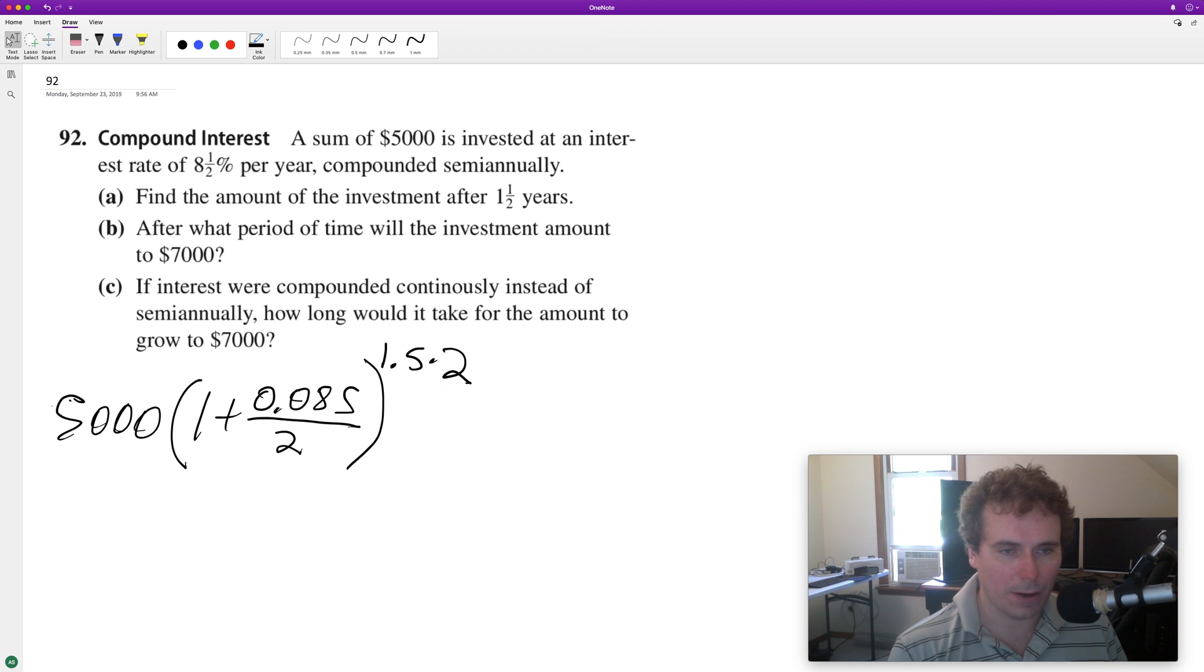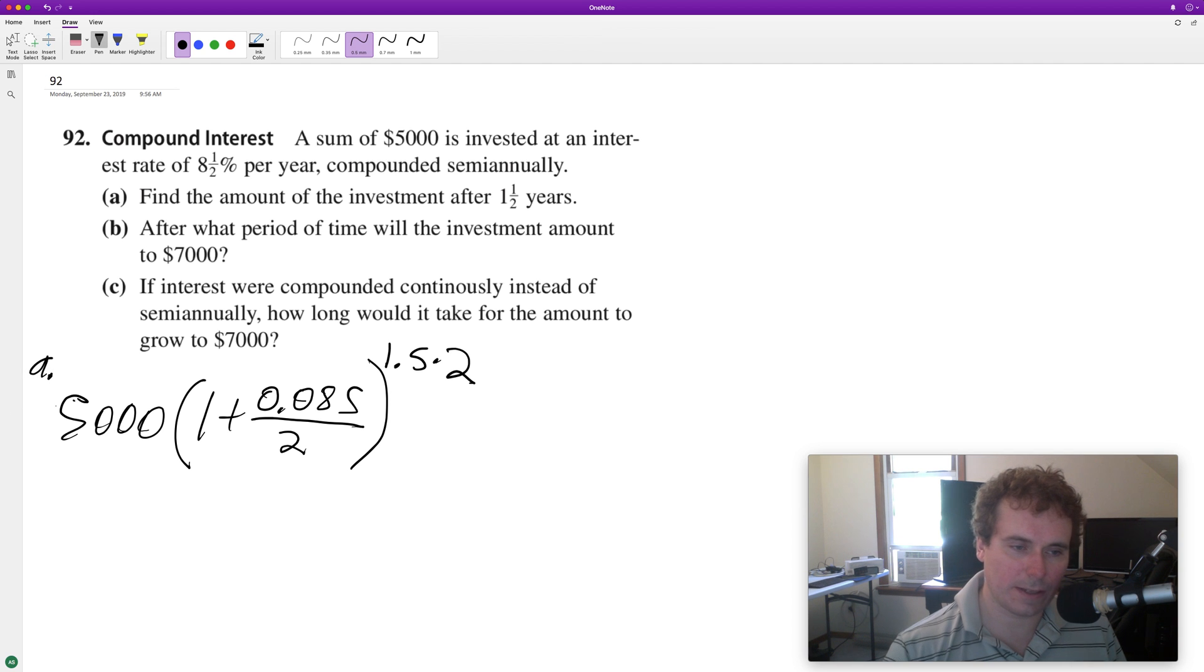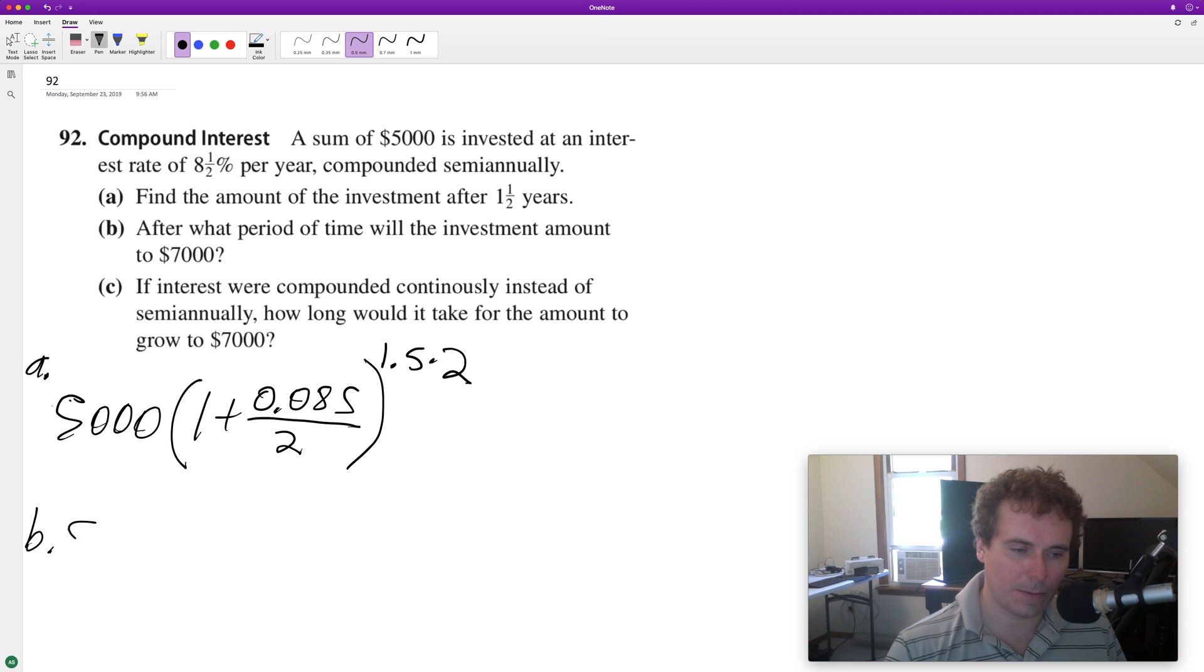I'll set these up first and then calculate them. For how long will it take to get to $7000? Assuming this scenario, it's going to be $5000 times 1 plus 0.085 divided by 2, raised to the 2x. Two is for semi-annually, then x is however long it takes to get to $7000.